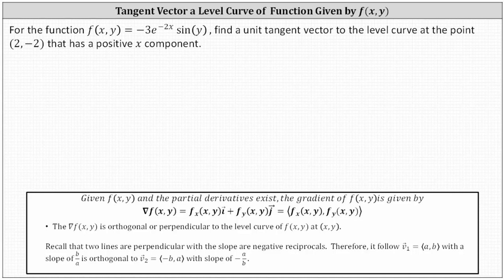For the function f of x comma y, find a unit tangent vector to the level curve at the point two comma negative two that has a positive x component.